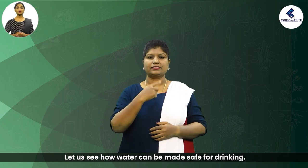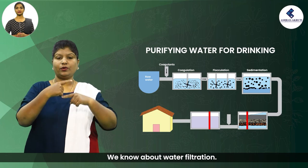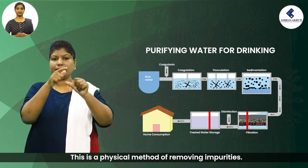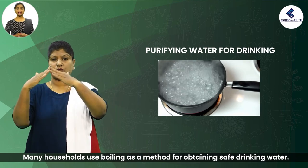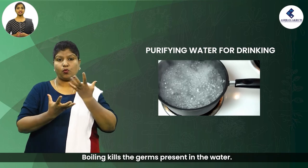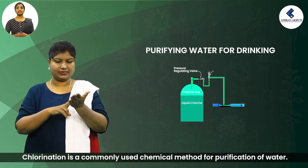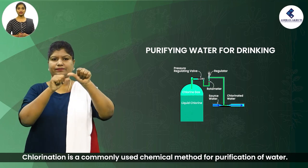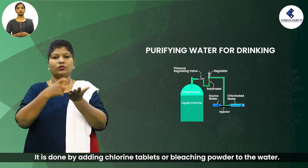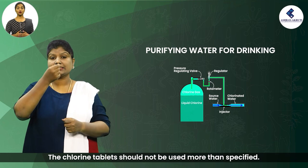Let us see how water can be made safe for drinking. Water filtration is a physical method of removing impurities. Many households use boiling as a method for obtaining safe drinking water, as boiling kills the germs present in the water. Chlorination is a commonly used chemical method for the purification of water, done by adding chlorine tablets or bleaching powder. The chlorine tablets should not be used more than the specified amount.